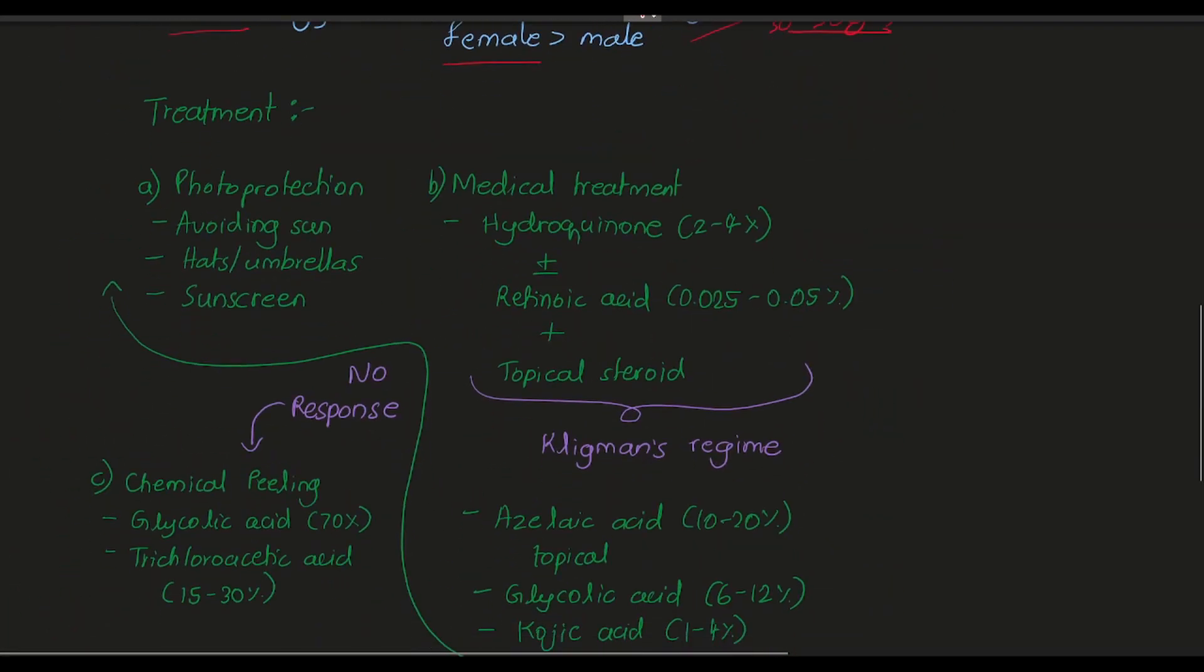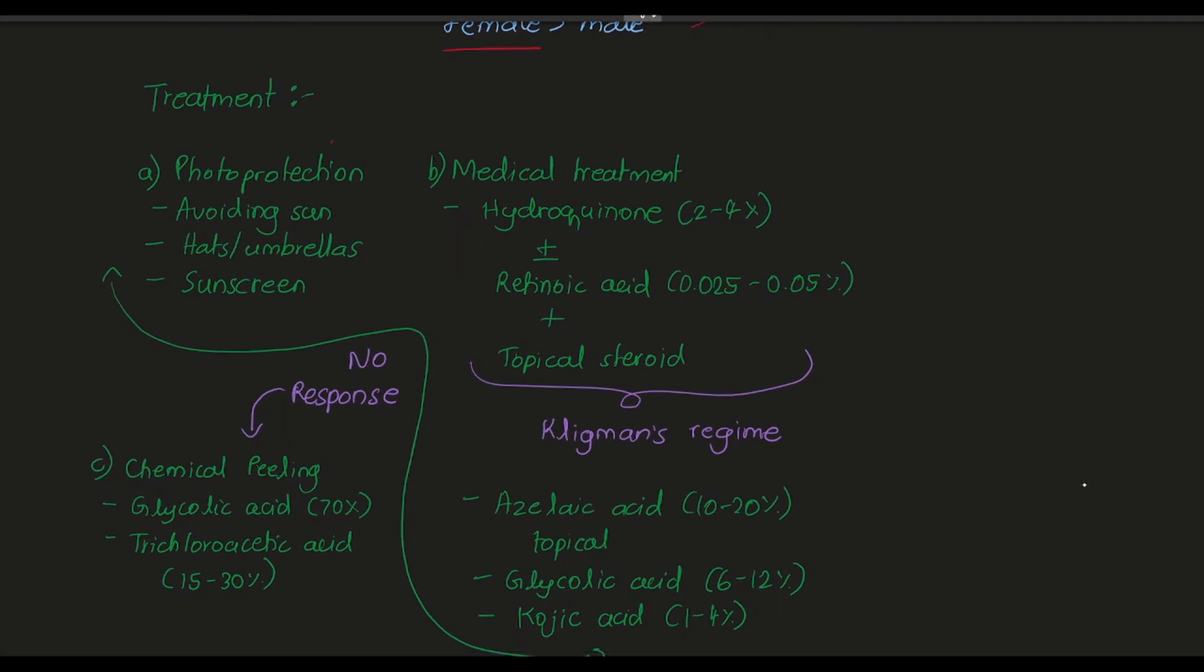What is the treatment of melasma? First, as we know it darkens on exposure to the sun, and there is an etiology of UV radiation. First, we will consider photoprotection - that is, protection from sunlight. We will avoid the sun and use hats and umbrellas, and we can also apply sunscreen.